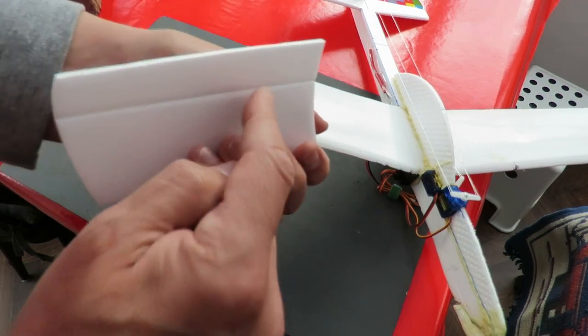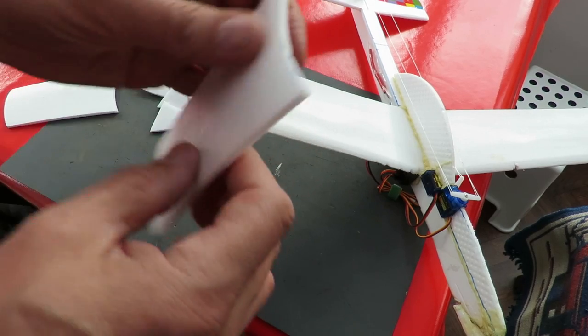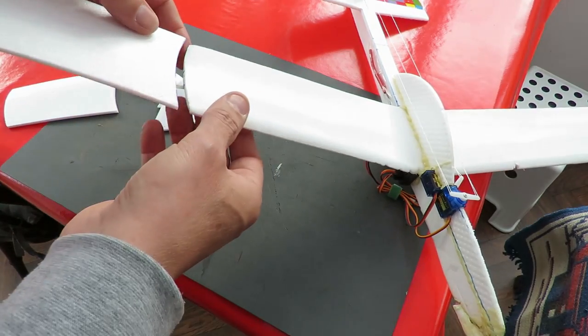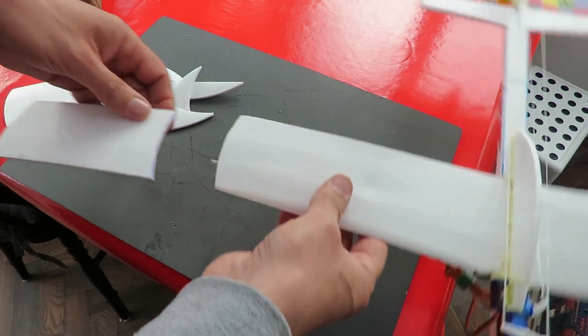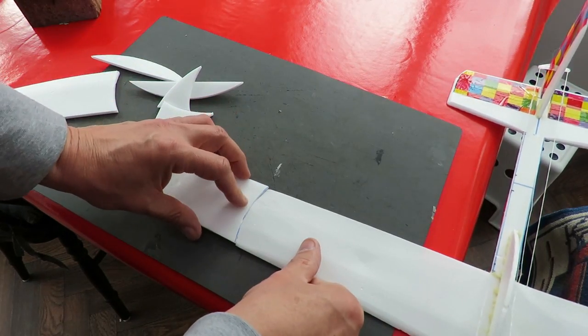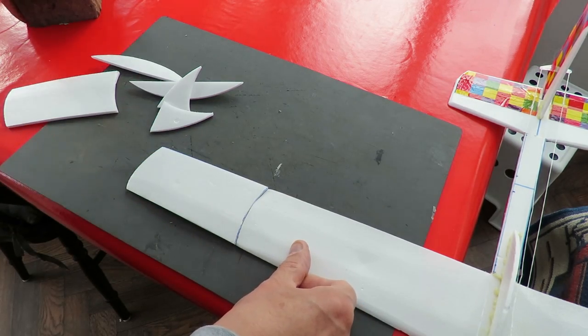I've already scored a fold underneath to give us the airfoil shape. So I'll put some Gorilla Glue on there and put a weight on top.